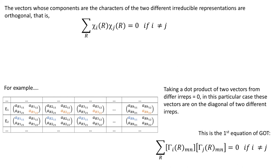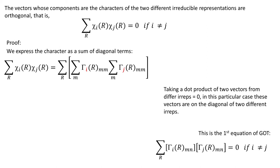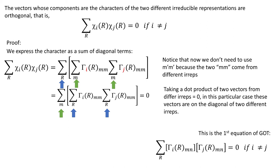Now let's see how we would write it down. First we would express the character as sum of diagonal terms. Notice that we are in different EREPs so we don't need any M prime M prime. Then we swap the order of summation. That is now we are taking a dot product of individual vectors. And then we sum over M. We know that this expression in brackets is 0 because it's just the first GOT equation where N is set to M.